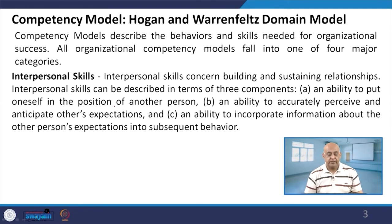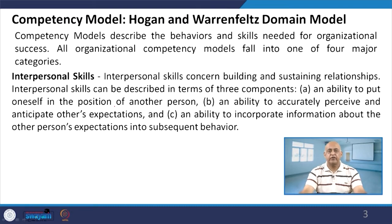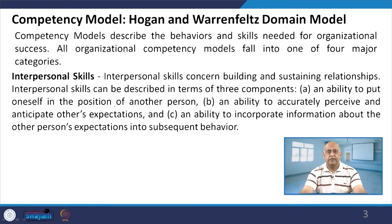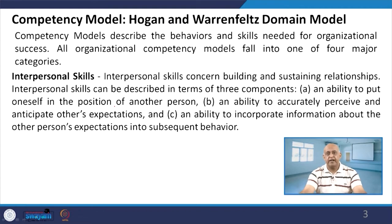When we talk about the competency model — Hogan and Werenfeld's domain model — this competency model describes behavior and skills. Whenever we talk about attitude, behavior and cognitive dissonance, that is the mental attitude or state of mind. This competency model is mostly focused on behavior: how behavior should be and what skills are needed for organizational success. All organizational competency models fall into one of four major categories.